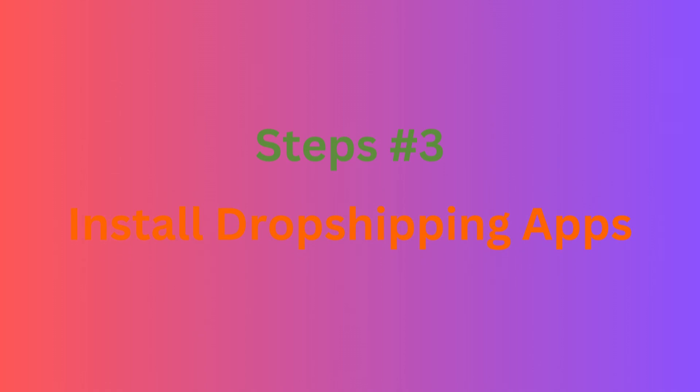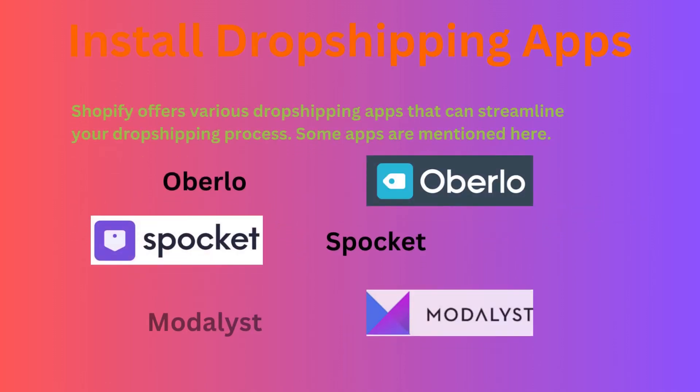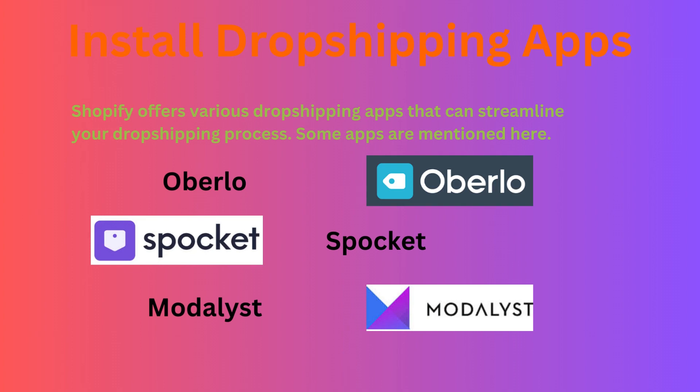Step 3: Install dropshipping apps. Shopify offers various dropshipping apps that can streamline your dropshipping process. Some popular ones include Oberlo, Spocket, and Modelist. These apps integrate with AliExpress and allow you to import products directly into your Shopify store. However, Oberlo is no longer on the Shopify platform, so you can use other apps for dropshipping.